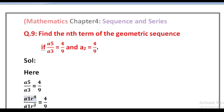The problem states: if a₅ divided by a₃ is equal to 4/9, and a₂ is equal to 4/9. Solution: here a₅ divided by a₃ is equal to 4/9.